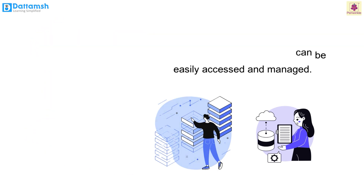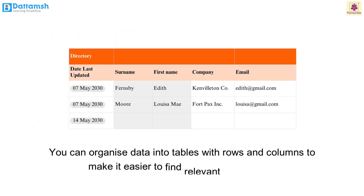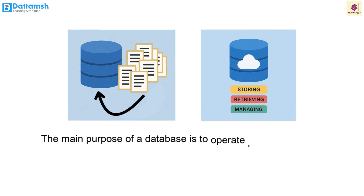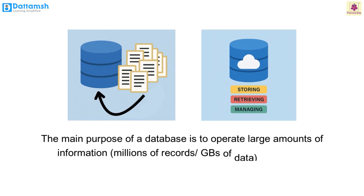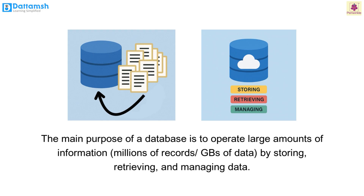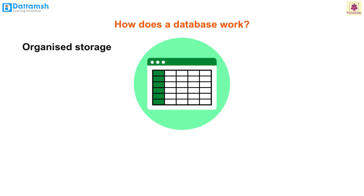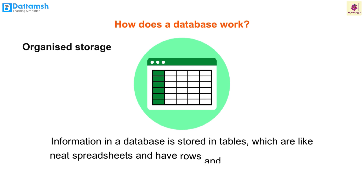Introduction to Database: A database is an organized collection of data so that it can be easily accessed and managed. You can organize data into tables with rows and columns to make it easier to find relevant information. The main purpose of a database is to operate large amounts of information — millions of records, GBs of data — by storing, retrieving, and managing data.